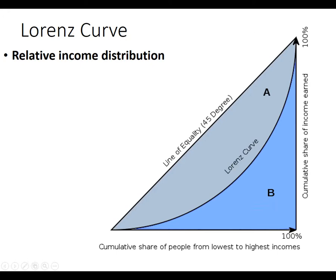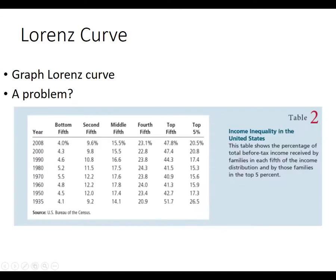What you want to write in your notes is the economics way to do this: it's called a Lorenz curve. The Lorenz curve shows relative income distribution — it shows how equal or unequal a country is in terms of wealth. We're going to draw one. Here's just the data: this is 2008, 2000, 1990, and so on.